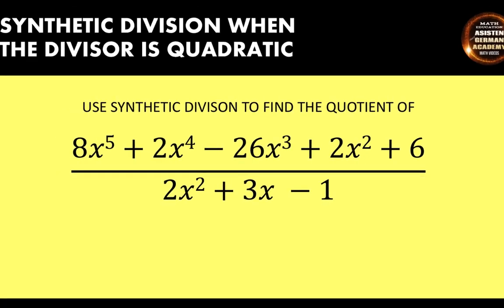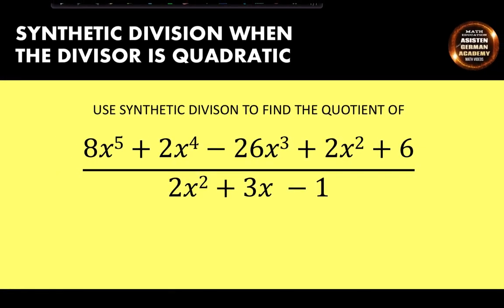Here is our problem for today: use synthetic division to find the quotient of 8x⁵ plus 2x⁴ minus 26x³ plus 2x² plus 6, all divided by 2x² plus 3x minus 1.